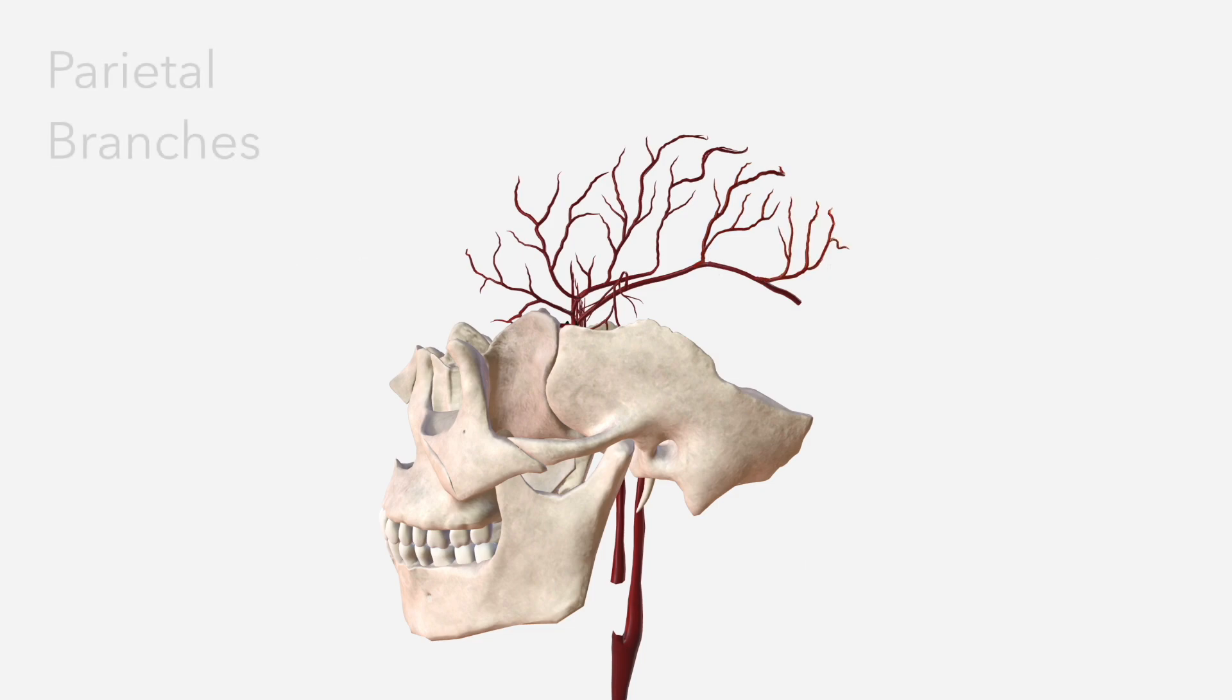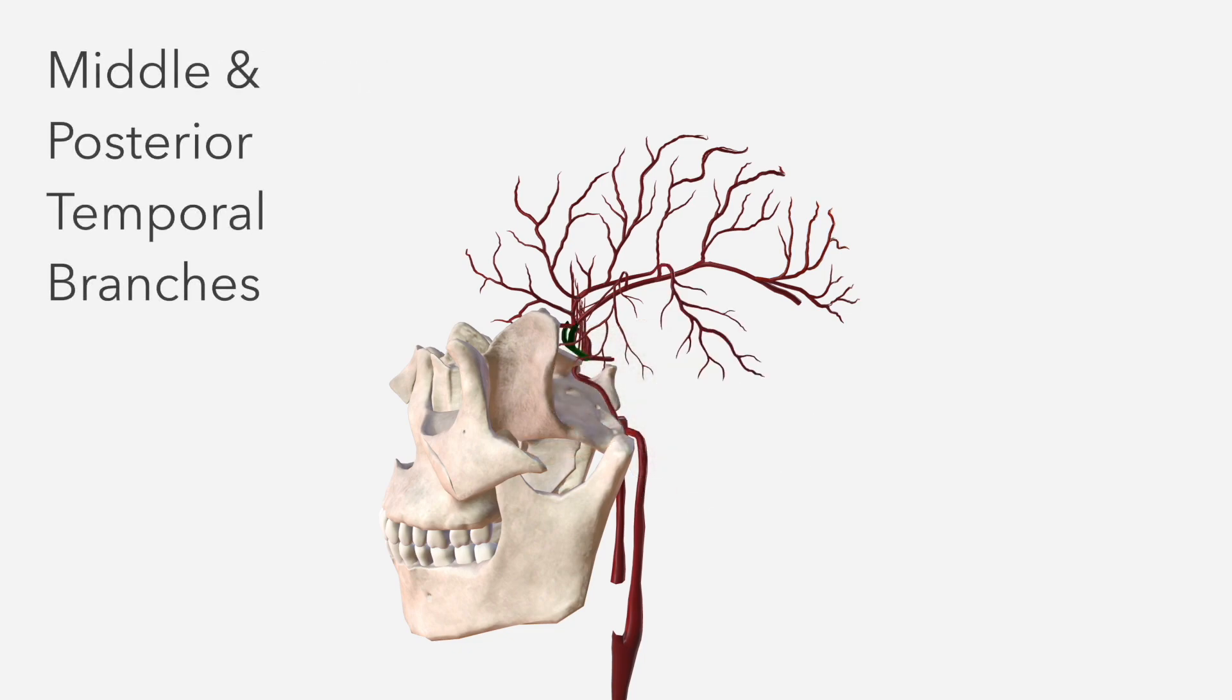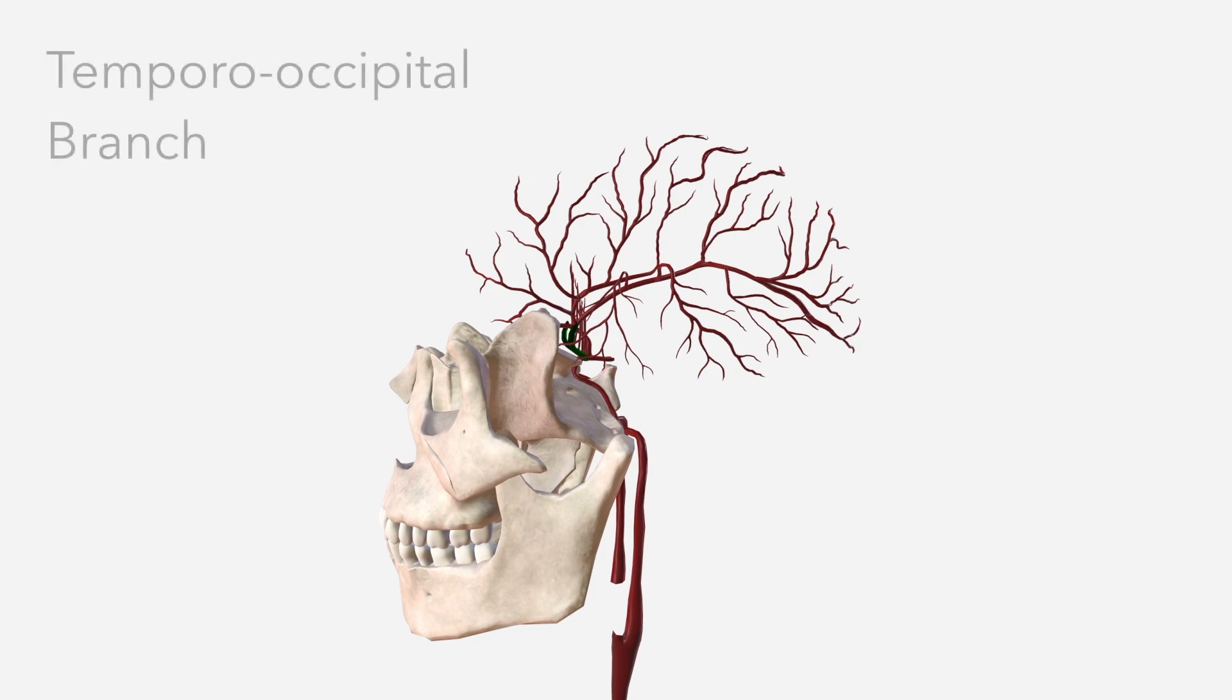We then have the parietal branches which supply the parietal lobe and the angular artery which traverses the angular gyrus and contributes to the supply of the parietal lobe as well as the occipital lobe. We then have the middle and posterior temporal branches which supply the temporal lobe and finish with the temporo-occipital branch most posteriorly.